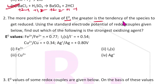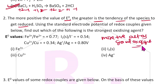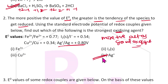The more positive the value of E° naught, the greater the tendency of the species to get reduced. More positive means it acts as a good oxidizing agent — a strong oxidizing agent. So Ag⁺/Ag — the answer for this question is the fourth option.